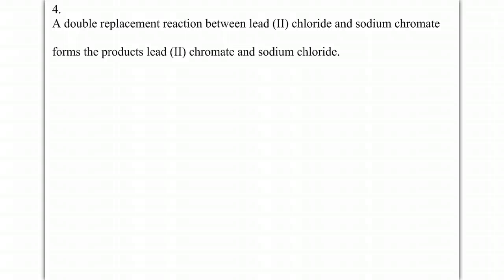This is telling you that you have a double replacement reaction, which is just specifying what kind of reaction it is, but you don't actually need it to translate. So we start here. Lead two chloride and sodium chromate forms the products lead two chromate and sodium chloride. So lead two chloride: lead is plus two, chloride is minus one, switch those charges.